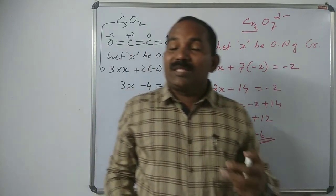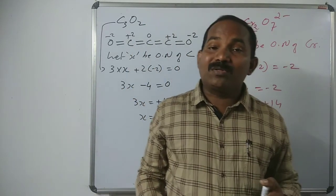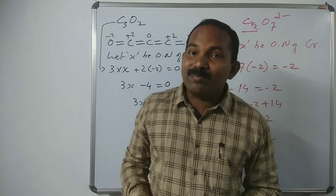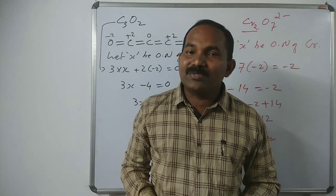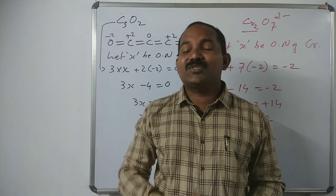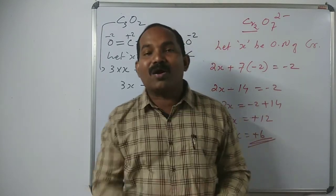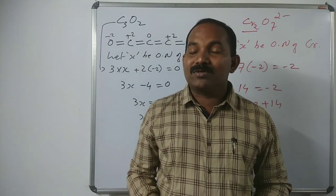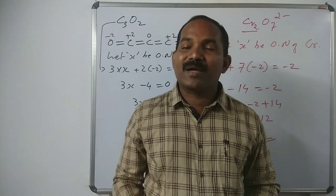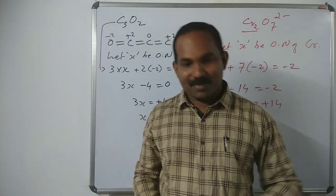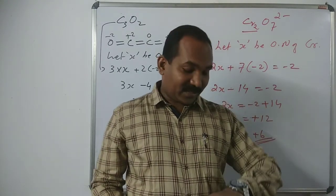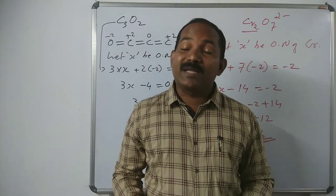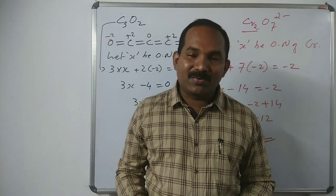In a neutral compound, the algebraic sum of all oxidation numbers equals zero; in an ion or radical, the sum equals its charge. This is about oxidation number and its determination — very important concepts. You should practice more problems to calculate or determine the oxidation number. The next concept will be discussed in the next session. Thank you.